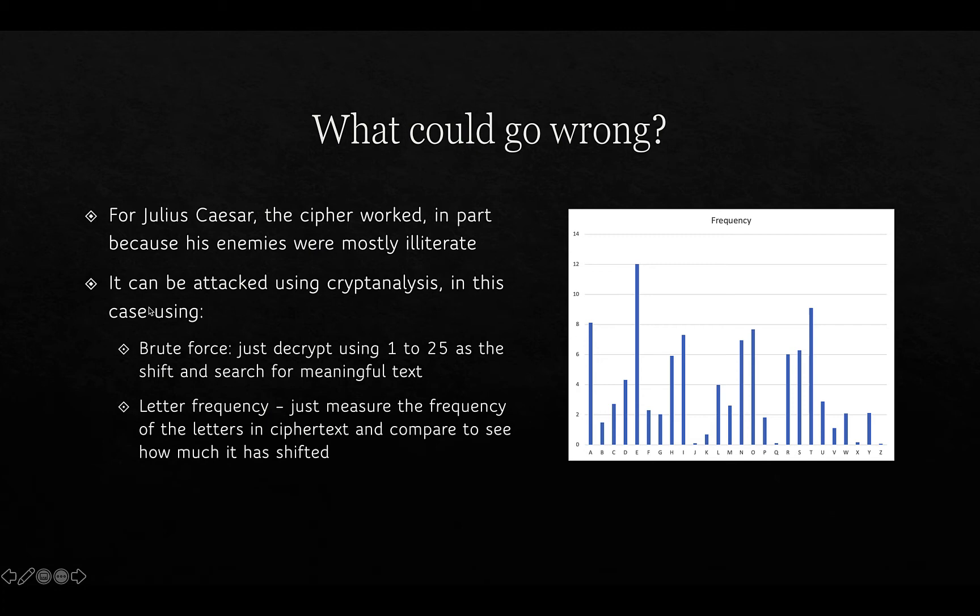For Julius Caesar the cipher worked, partly because most of his enemies were actually illiterate. However, for those who could employ cryptanalysis — the process of analyzing ciphertext — we can use brute force. It's not that hard because we can just decrypt using shifts 1 to 25 and search for meaningful text; that's the easiest approach.